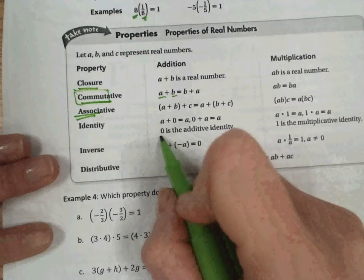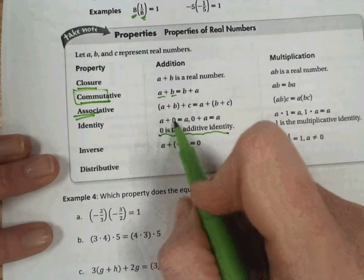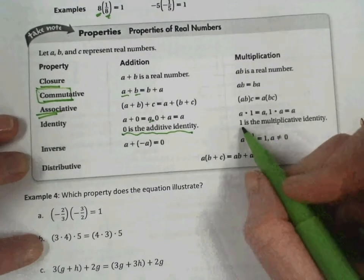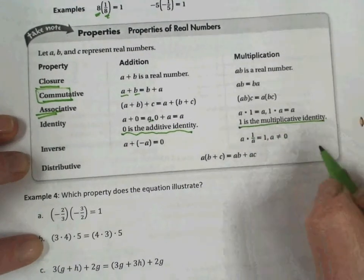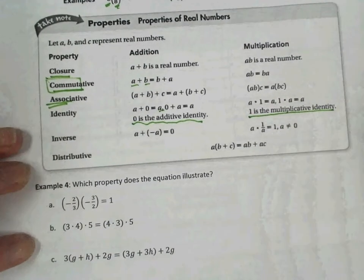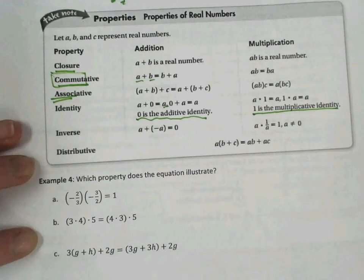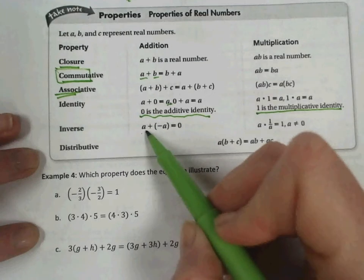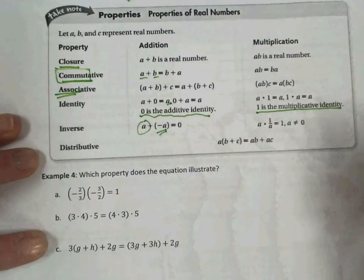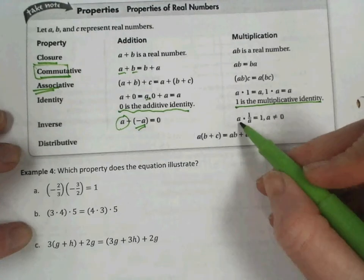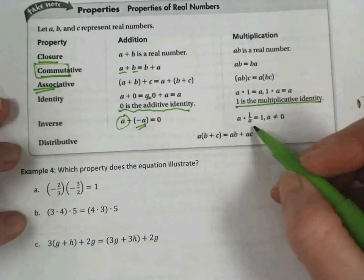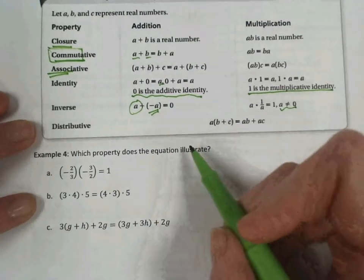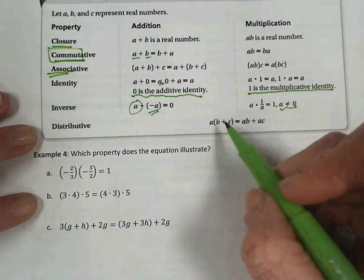Next is the identity property. So for addition, our additive identity is 0. So if we add 0, we still get the same result. For multiplication, 1 is the multiplicative identity. So anything times 1 has that same result. Next is the inverse property. And so we have what we talked about a little bit above, which is when we add a number plus its opposite, we get 0. And when we multiply a number times its reciprocal or multiplicative inverse, we get 1. And of course, a cannot be 0. That would make the denominator 0.